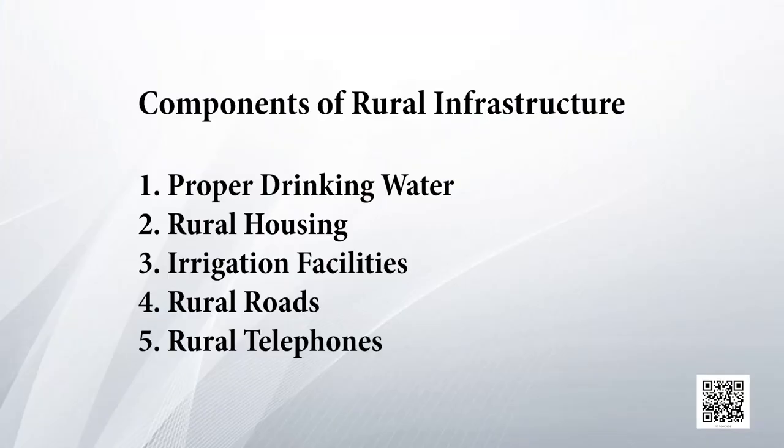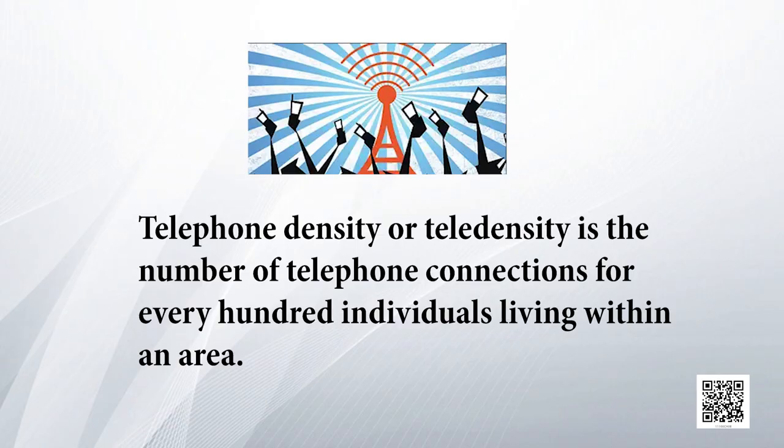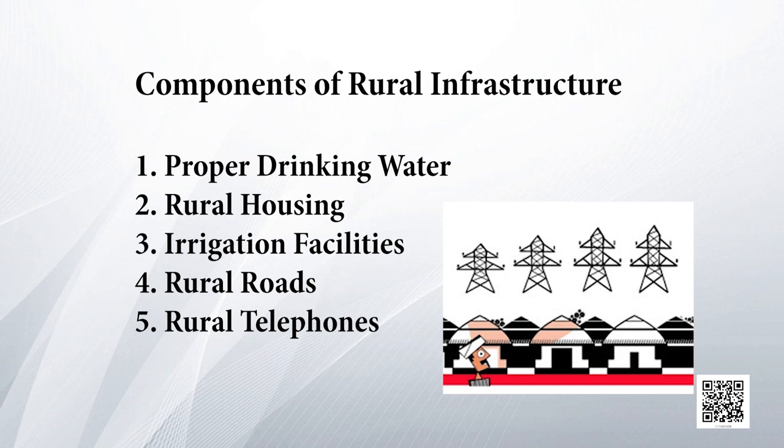Then there is rural telephone. In rural areas, communication facilities have not been developed yet. In urban areas, tele density — which refers to the number of phones per 100 population — is very high, but in rural areas it is very low. We need to develop communication facilities for rural areas. The last component is electrification — there are many rural areas which have not been electrified yet, and the government should take steps to electrify the villages completely.